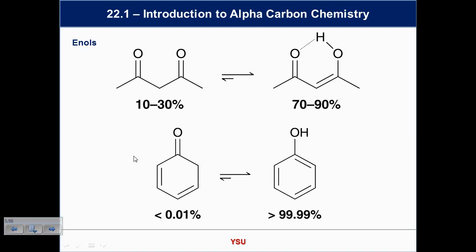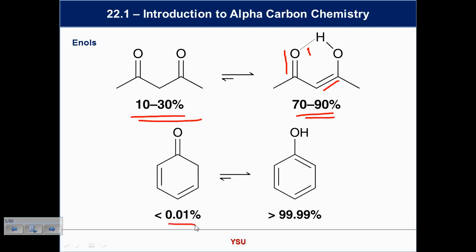Looking at other systems: with a 1,3-diketone, it turns out the enol form is preferred. Why? Conjugation — the carbonyl and the double bond are next to each other, conjugated — plus hydrogen bonding, which is also worth some energy. So conjugation and hydrogen bonding help stabilize this enol even though normally enols are disfavored. Down at the bottom, I have a system with essentially none of the keto form — it's almost exclusively the enol. Why? Aromaticity.